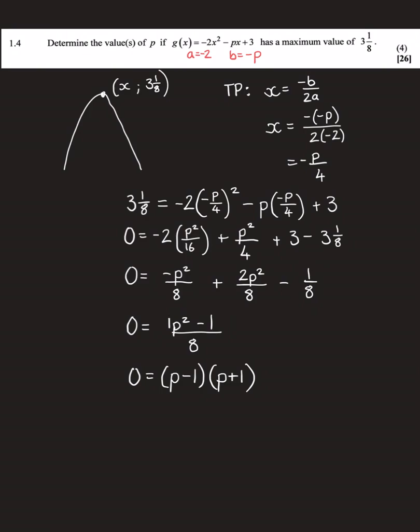I then added my like terms. I divided both sides by 8, so I was left with p² minus 1. So it's almost as if the 8 just disappeared. Poof! Just like that. And after that, I then factorized. So this means p will either have a value of 1 or p will have a value of negative 1.